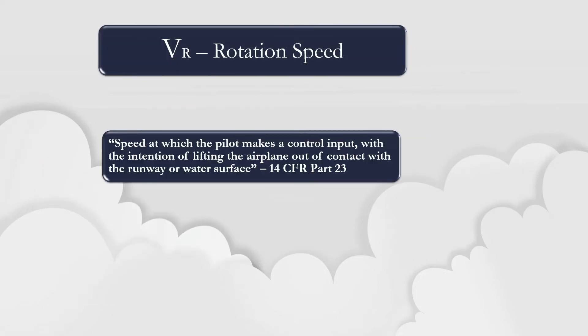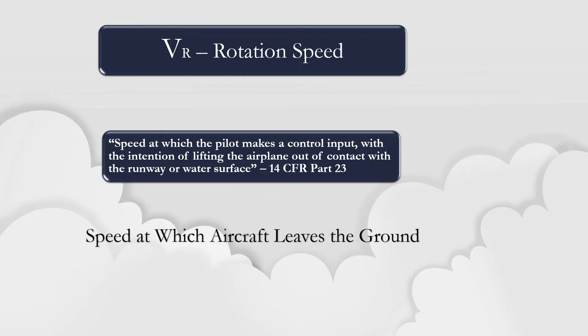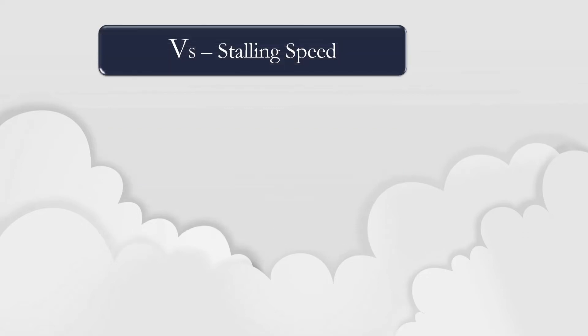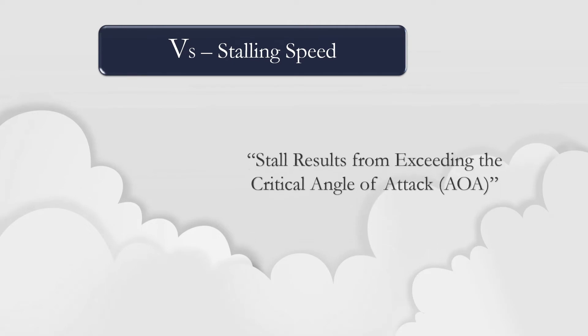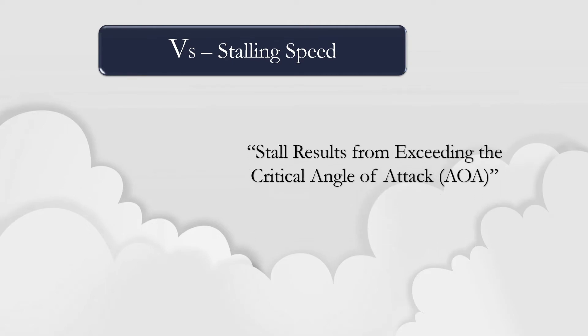The VR speed is the rotation speed and, according to CFR Part 23, is the speed at which the pilot makes a control input with the intention of lifting the airplane out of contact with the runway or water surface. The VS speed indicates the stalling speed of an aircraft. It is important to remember that airplanes can stall at any pitch attitude or airspeed.